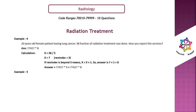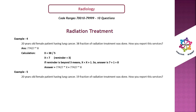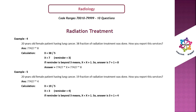Example 5: 19 fractions of radiation treatment. The answer is 77427 × 4. Calculation: x = 19 ÷ 5 = 3, remainder = 4. Since remainder is beyond 3, apply x = x + 1 = 3 + 1 = 4. Answer = 77427 × 4.